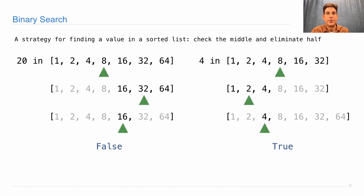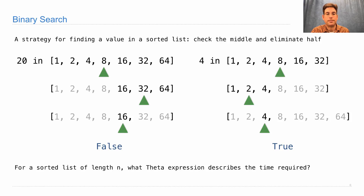So now I know that 4 is in the list. And that's binary search. For a sorted list of length n, what theta expression describes the time required to check whether an element is in that list? The answer is theta(log n), because I eliminate half the work with each step.